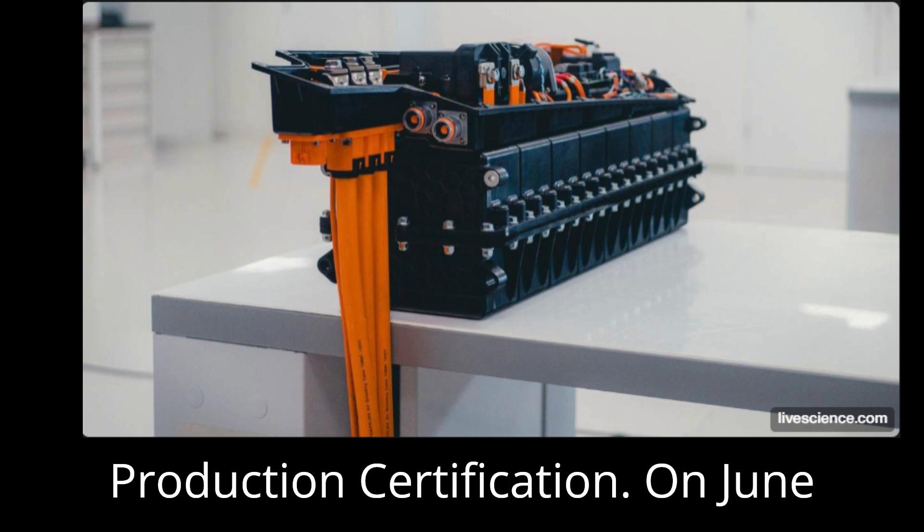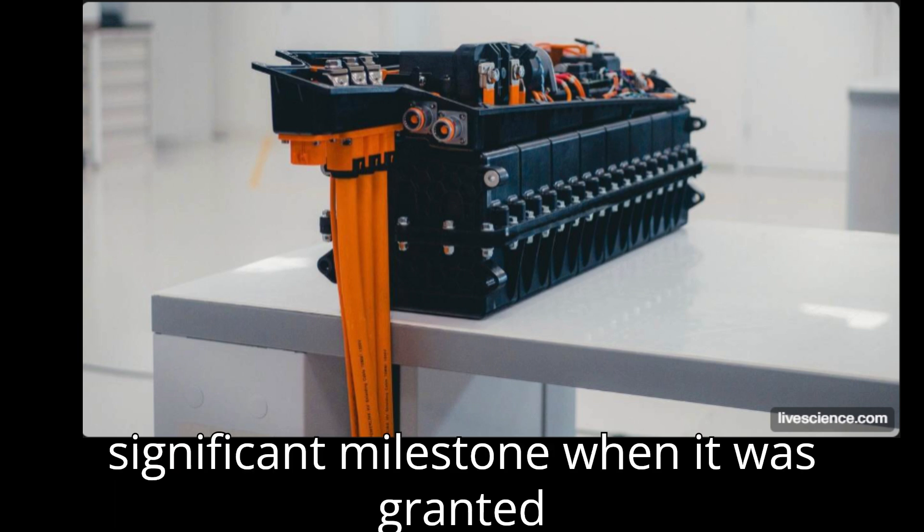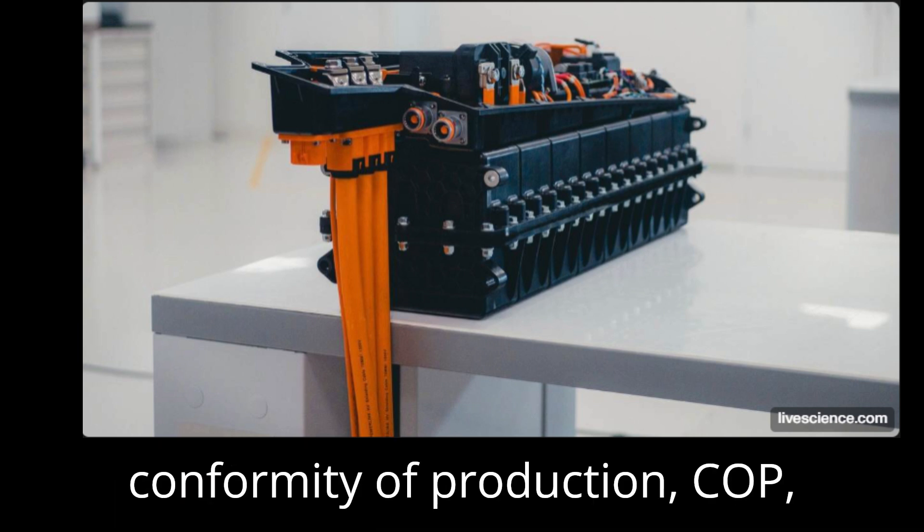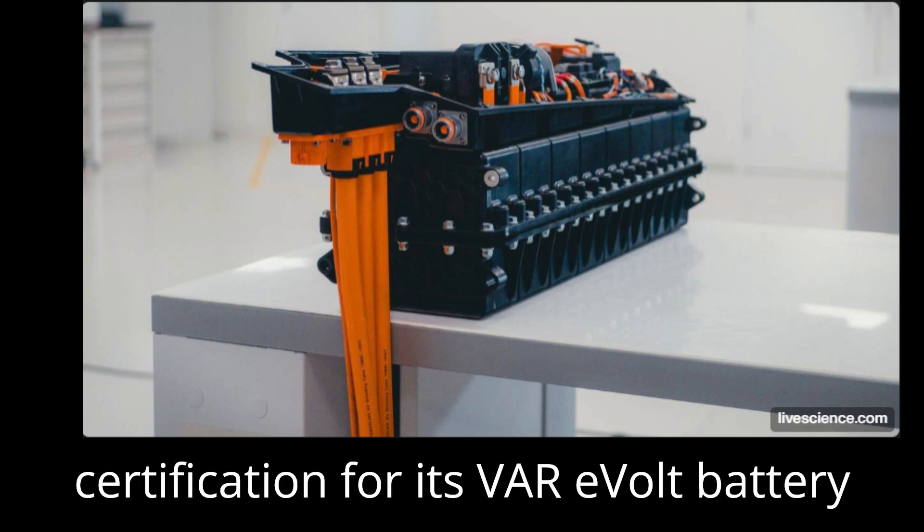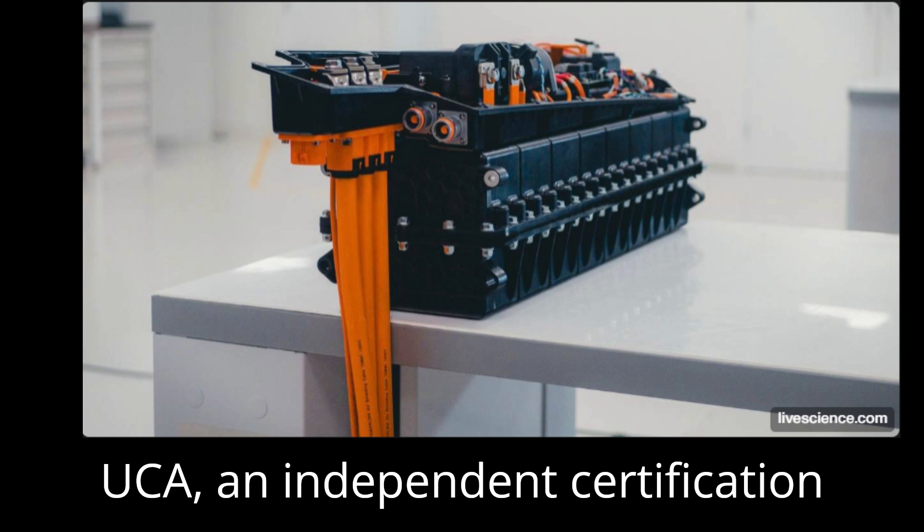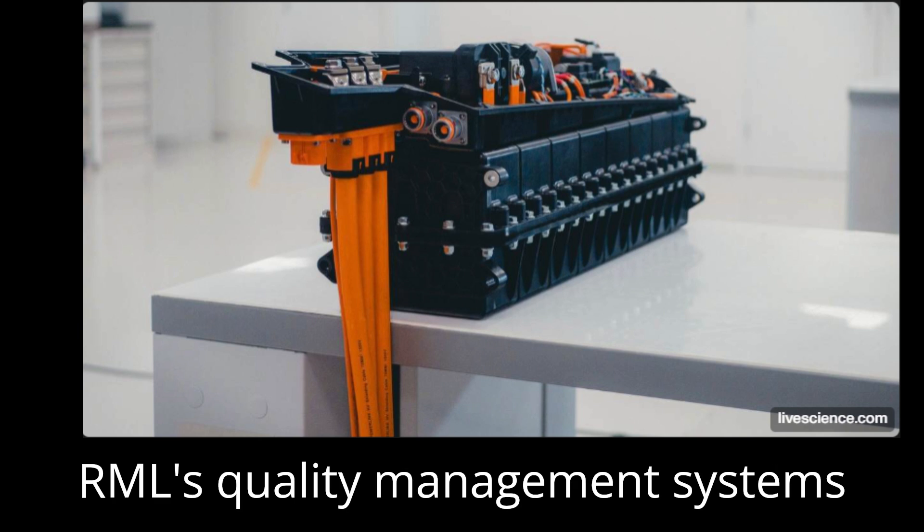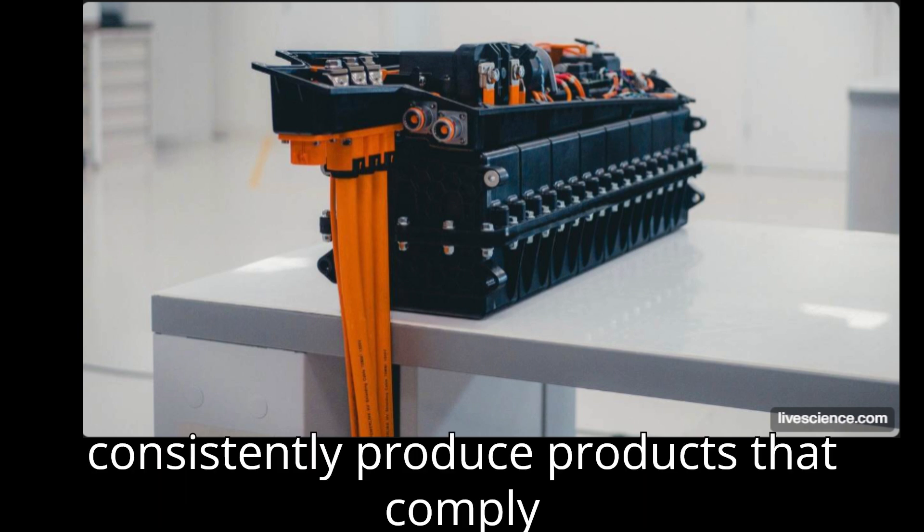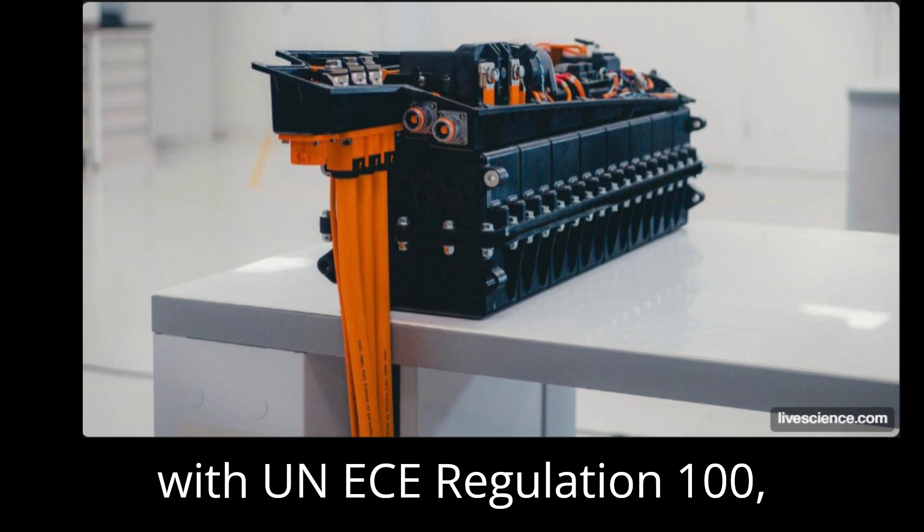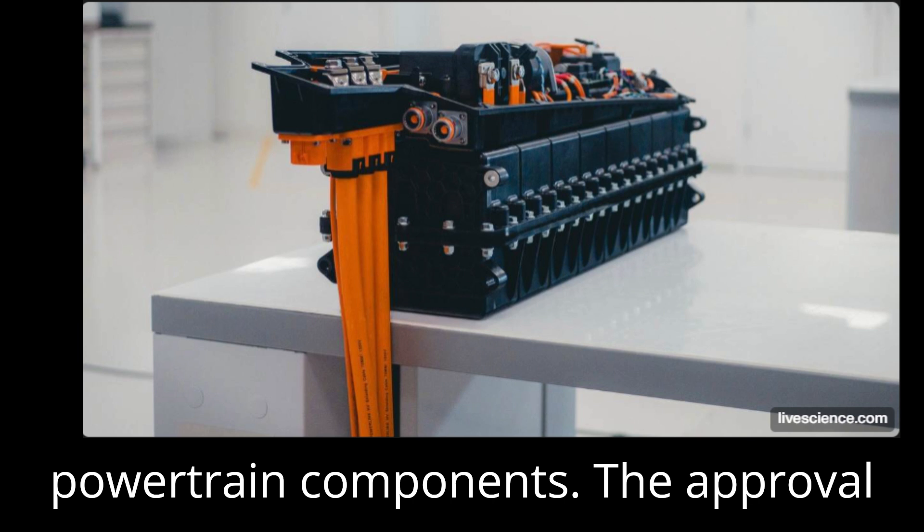On June 2, 2025, RML Group achieved a significant milestone when it was granted conformity of production (COP) certification for its VAR-E-Volt battery systems following a rigorous audit by UCA, an independent certification body. This certification confirms that RML's quality management systems consistently produce products that comply with UN-ECE Regulation 100, the key safety standard for electrified powertrain components.